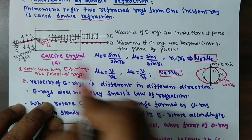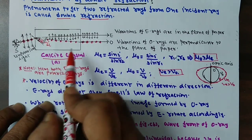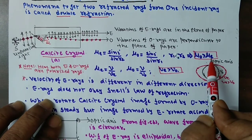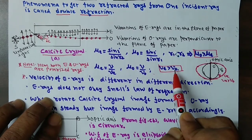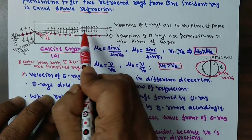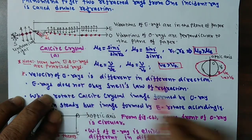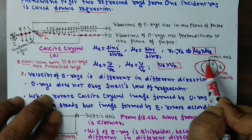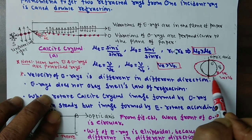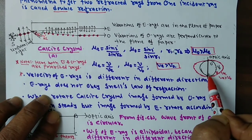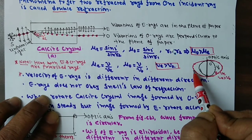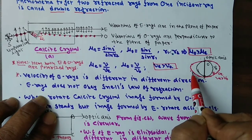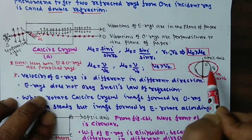For the extraordinary ray, its velocity is different in different directions. So whenever you draw the wavefront, it will be ellipsoidal. The wavefront for the extraordinary ray is ellipsoidal, and the wavefront for the ordinary ray is circular. The ellipsoidal wavefront of the extraordinary ray is outside the circular wavefront, because vₑ is greater than vₒ.